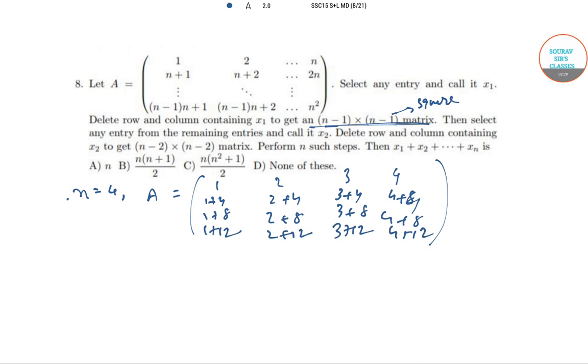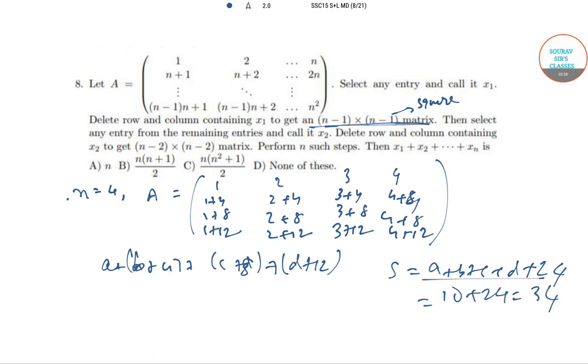Note that S equals the summation of xᵢ, which equals a + (b+4) + (c+8) + (d+12), where a, b, c, d is a permutation of 1, 2, 3, 4. So simply, S = a+b+c+d + 24. Since 1+2+3+4 = 10, we get S = 10+24 = 34.